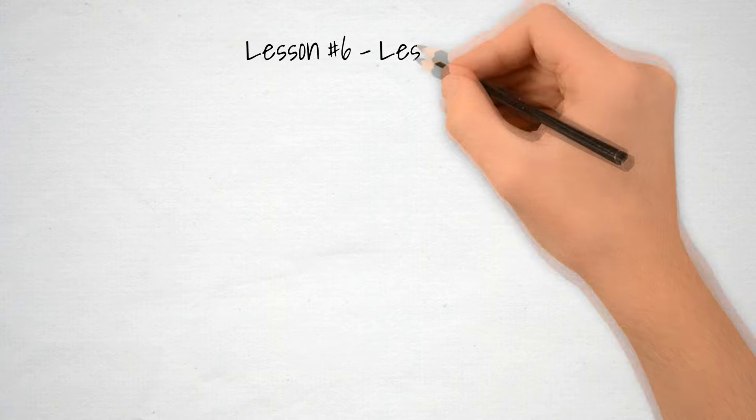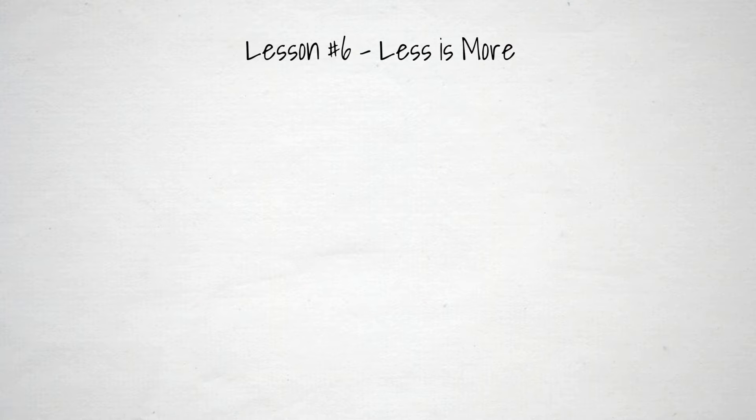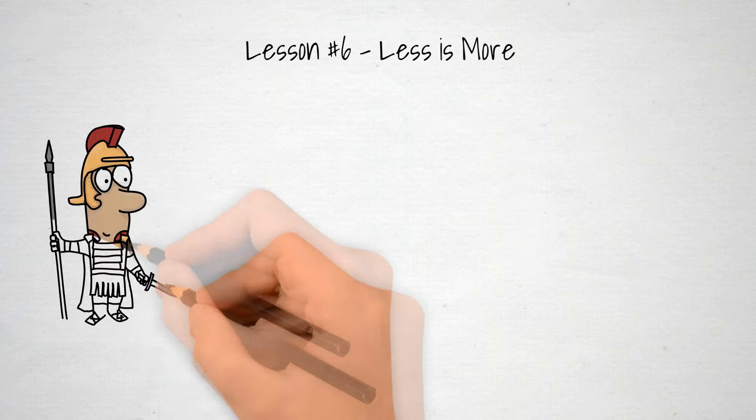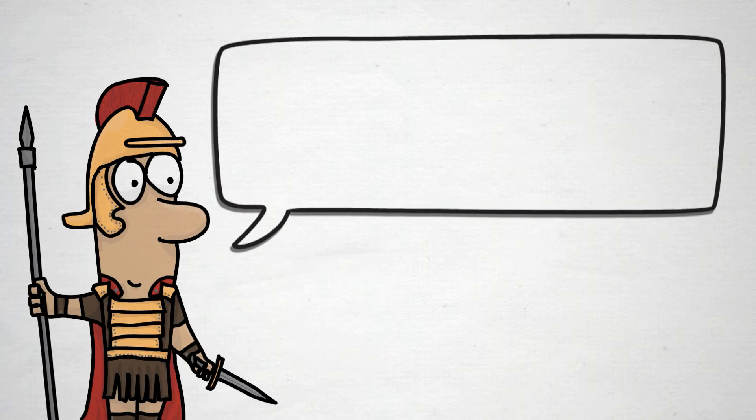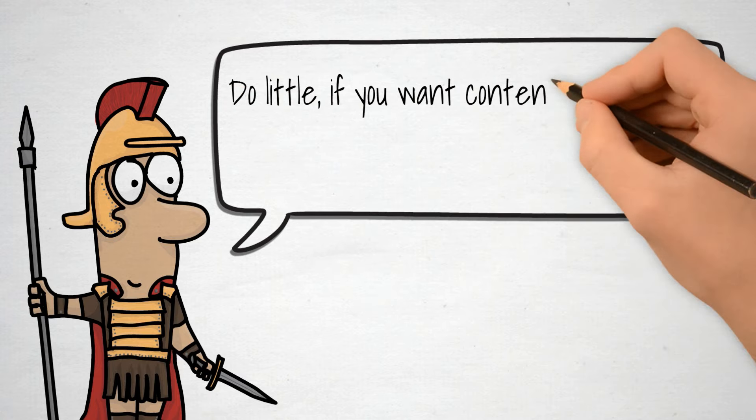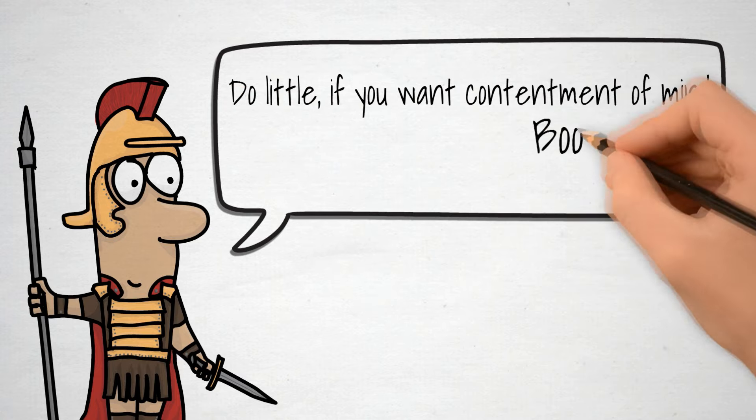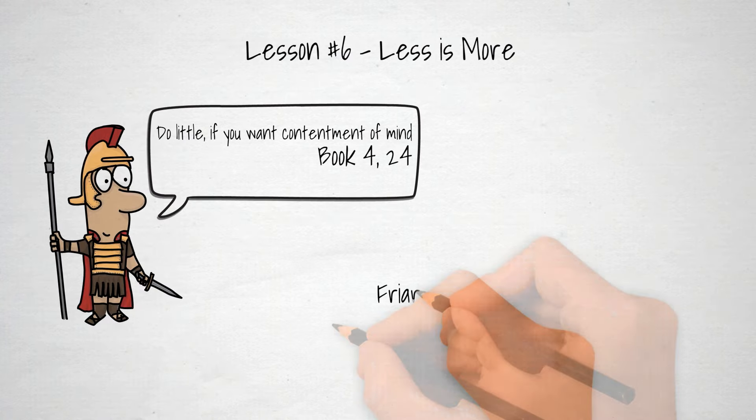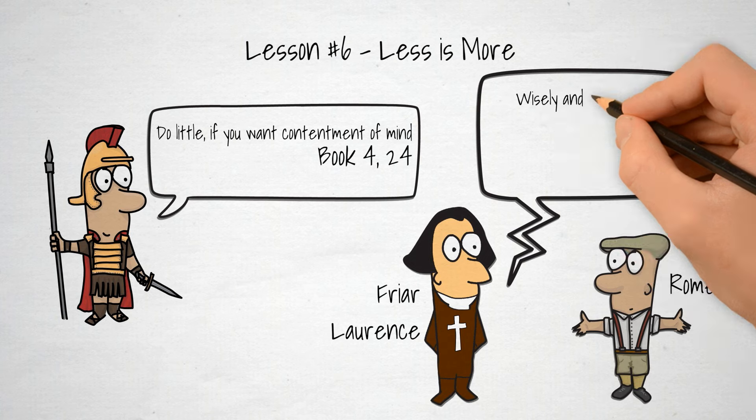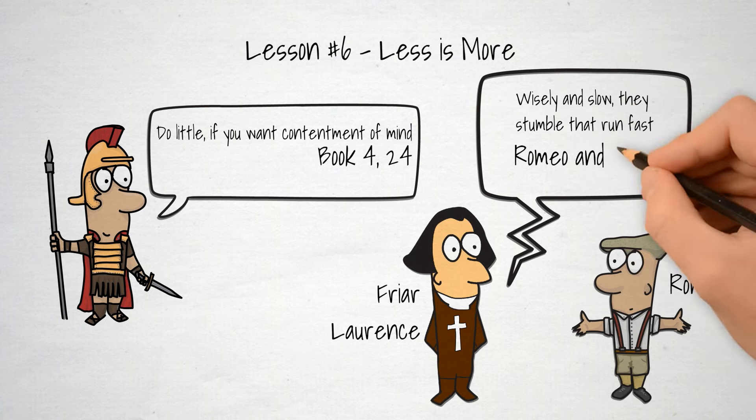Lesson 6: Less is more. Shakespeare and Marcus Aurelius are of one mind when it comes to the age-old saying that less is more. We should focus on doing one thing well and thoughtfully, rather than rushing many things at once. Do little if you want contentment of mind. And as Friar Lawrence fatedly chide Romeo, wisely and slow, they stumble that run fast.